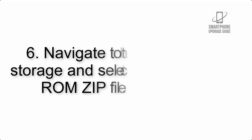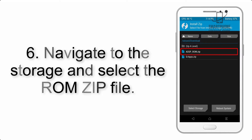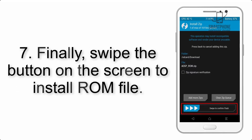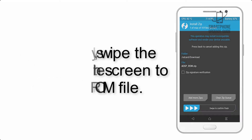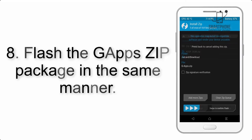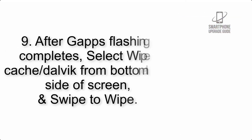Step 5: Go back to the recovery main screen and tap on the Install button. Step 6: Navigate to the storage and select the ROM zip file. Step 7: Swipe the button on the screen to install the ROM file.